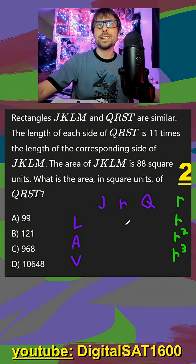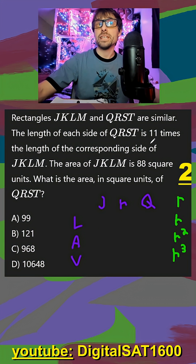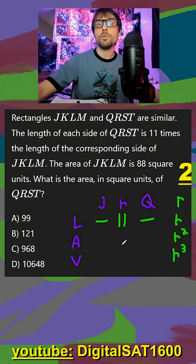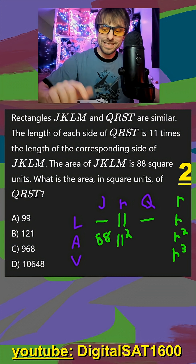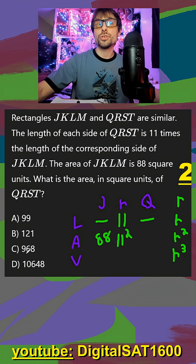Our ratio number here is given to us directly — normally they might say Q is 200 and J is 10, and you'd divide those to get your ratio number. But they already told us it's 11 times the size, so our ratio number is 11 for length. For area, which is what we want to solve for, we do 11 squared. So 11 squared is what we multiply by J's area to get Q's area. They give us that J is 88, so 88 times 11 squared gives us 10,648.